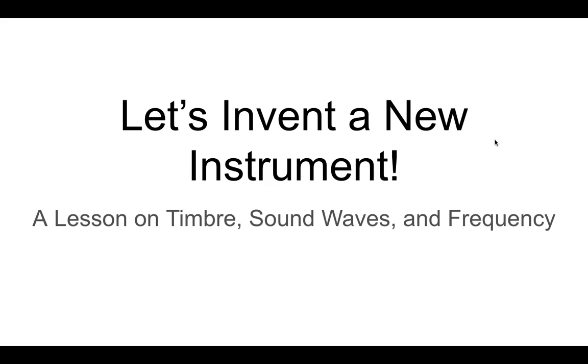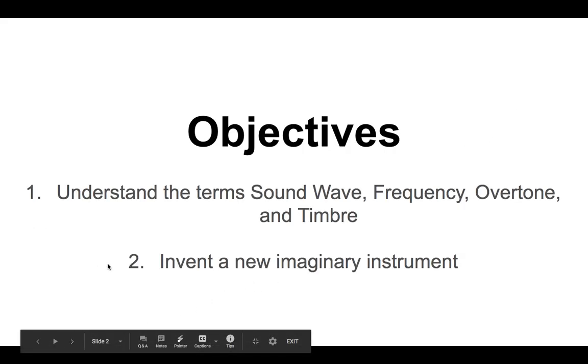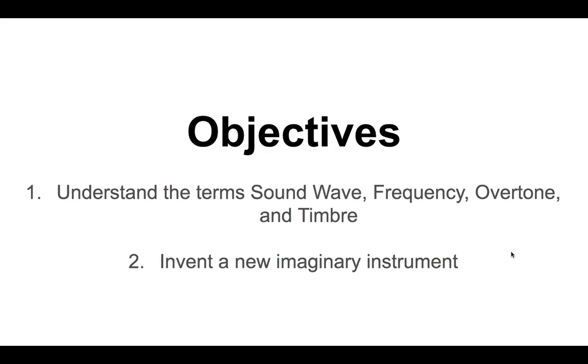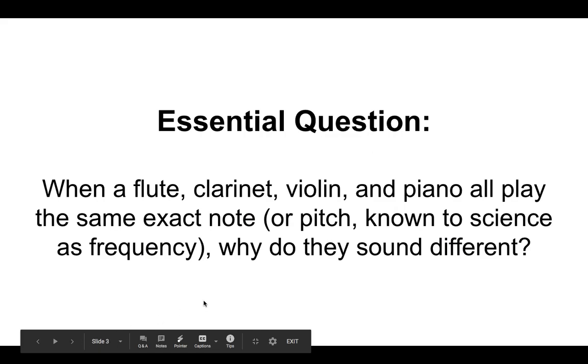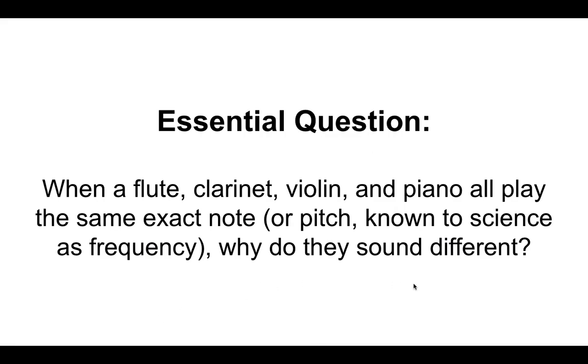Alright, so let's get into this. Our objectives are we're going to understand the terms sound wave, frequency, overtone, and timbre. And number two we're going to invent a new imaginary instrument. So our essential question here is when a flute, a clarinet, violin, and a piano all play the same exact note, why do they sound different.